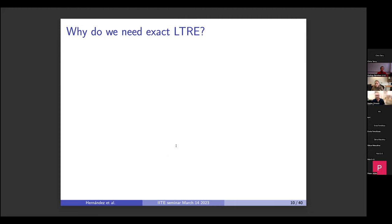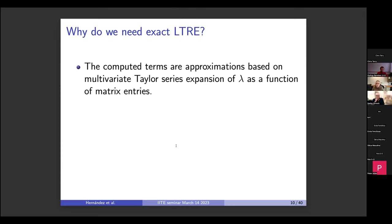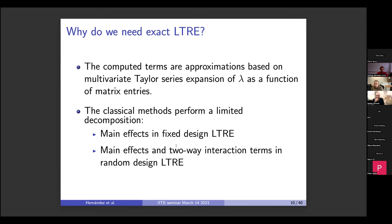This method has been in use in ecology for a few decades — a relatively mature analysis. Why do we need exact LTRE? The first motivation is that the computed terms are approximations based on multivariate Taylor series expansion of lambda as a function of matrix entries. The second is that classical methods perform a limited decomposition: fixed design LTRE includes only main effects, and random design LTRE includes main effects and two-way interaction terms. Because lambda is such a nonlinear function of many variables, those higher-order interaction terms exist, there are many of them, and we don't know how important they are.